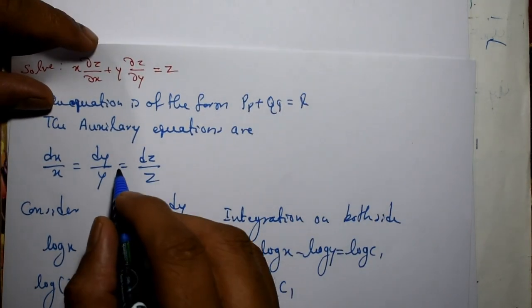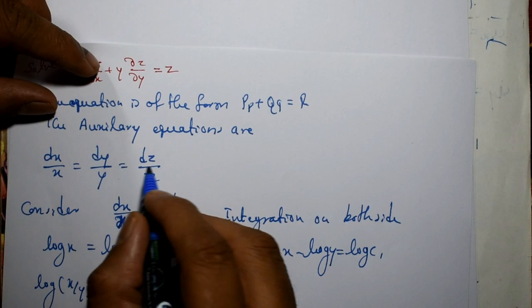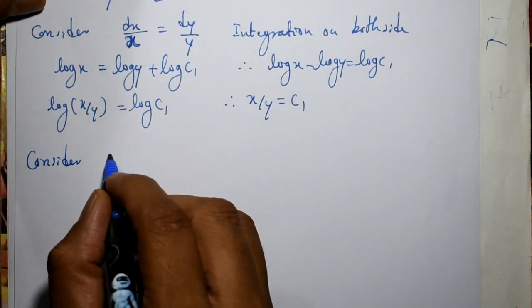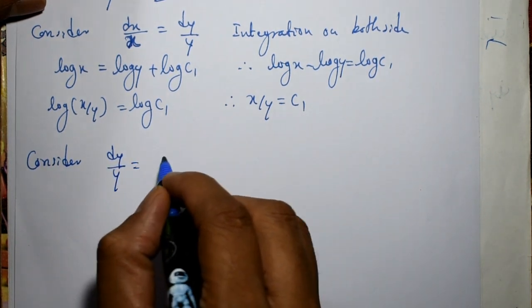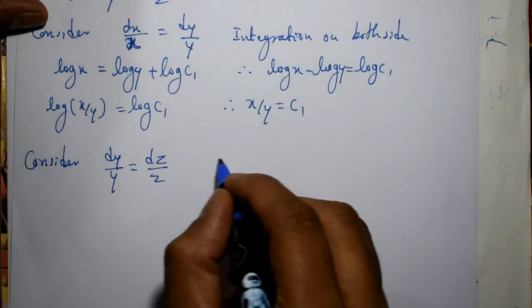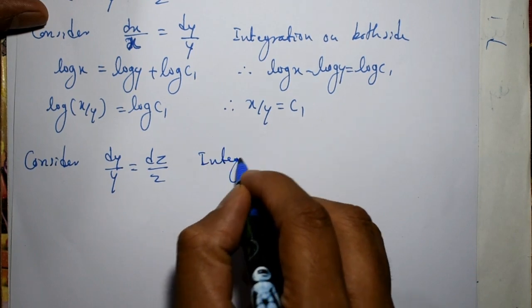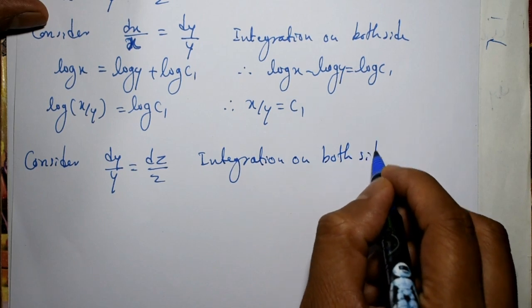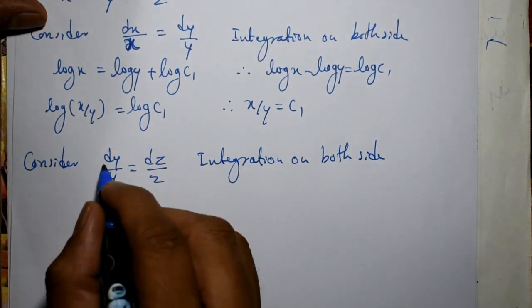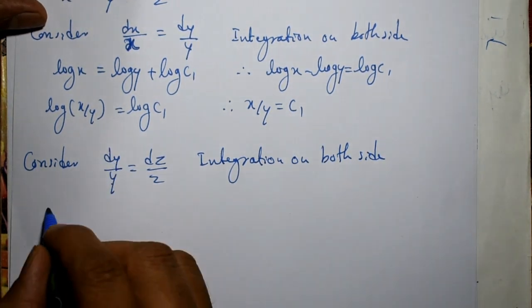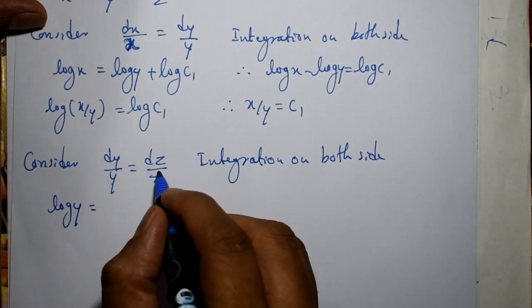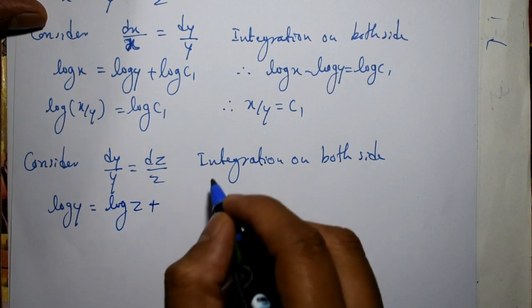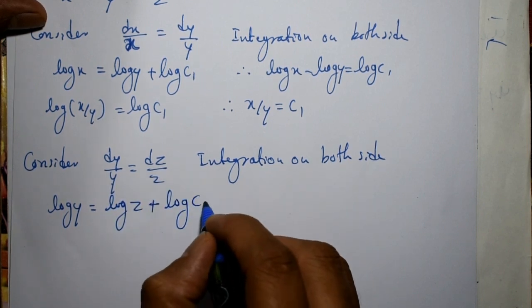Now consider one more, first second term and third term. So once again consider dy/y = dz/z. Now integrating, once again integration on both sides. This integration of 1/y with respect to y is log y. And this is equal to integration of 1/z with respect to z, that is log z, plus integral constant, that is called log c₂.